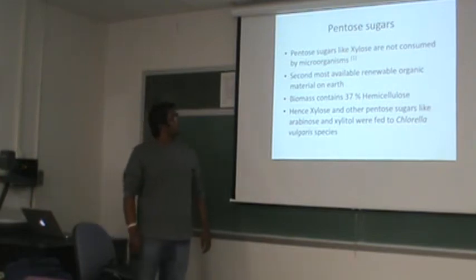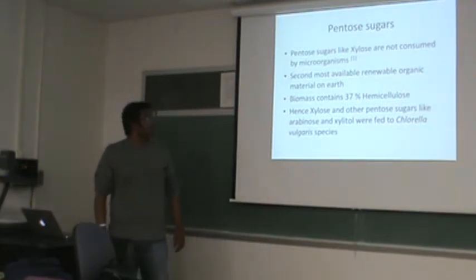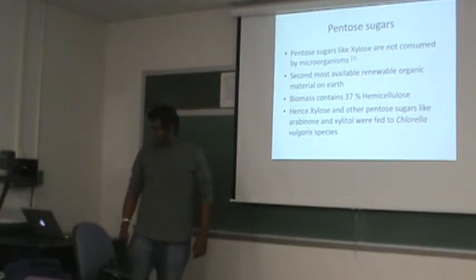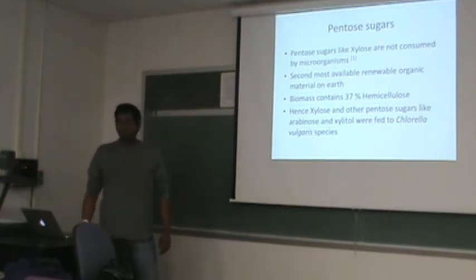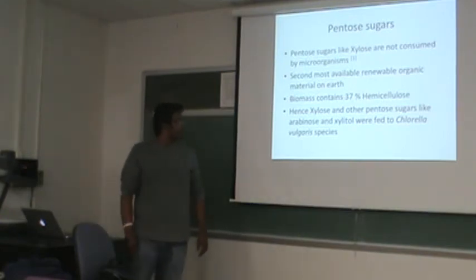That's why they're termed as non-fermentative sugars. And they are the second most available renewable organic material on earth. The biomass actually contains about 37% hemicellulose. And hence, xylose and other pentose sugars, like arabinose and xylitol,